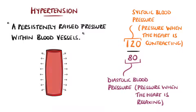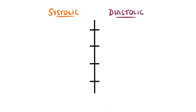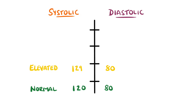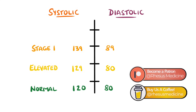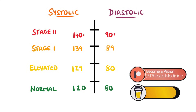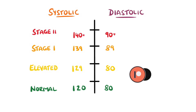Depending on where you look there are different cutoff points that define hypertension. The American Heart Association defines a normal blood pressure as less than 120 mmHg systolic and 80 mmHg diastolic. They consider it elevated if the systolic is between 120 and 129. Stage 1 hypertension is defined when the systolic pressure is 130 to 139 and the diastolic is between 80 and 89, with stage 2 being reached at 140 over 90 or above.